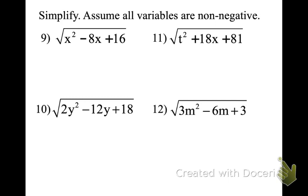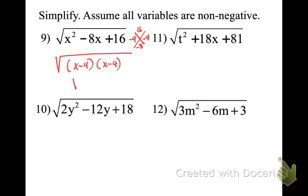Assume all variables are non-negative. We're going to have to factor. For x² minus 8x plus 16: what multiplies to 16 and adds to negative 8? That's negative 4, negative 4. When we take the root of that perfect square trinomial, it becomes x minus 4. We don't need the absolute value because it says assume all variables are non-negative.